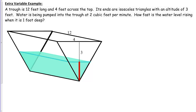Let's start by setting up our picture. We want to establish our variables and fill in any additional information that's relevant. The dimensions of the trough itself are: 12 feet long, 4 feet wide, and 3 feet high — the height of the triangle sides are 3 feet high. Water is being pumped into this trough, and we want to know how fast the water level is rising, specifically when the water is 1 foot deep.